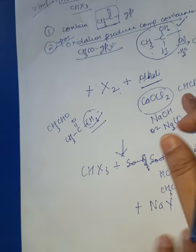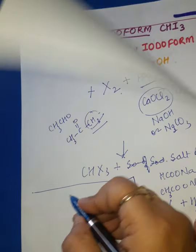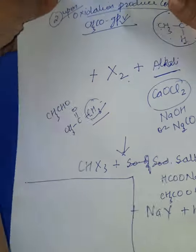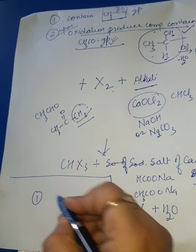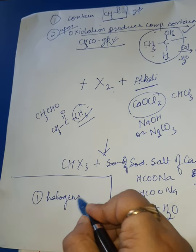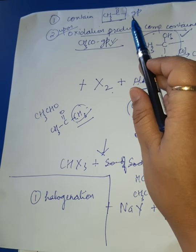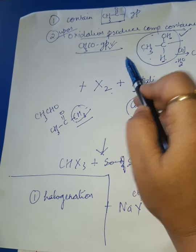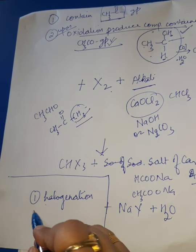In any Haloform reaction, there are two basic steps: Step 1 is Halogenation, which occurs in every type of Haloform reaction — whether you take a compound directly containing methyl keto group or one that gives it upon oxidation.